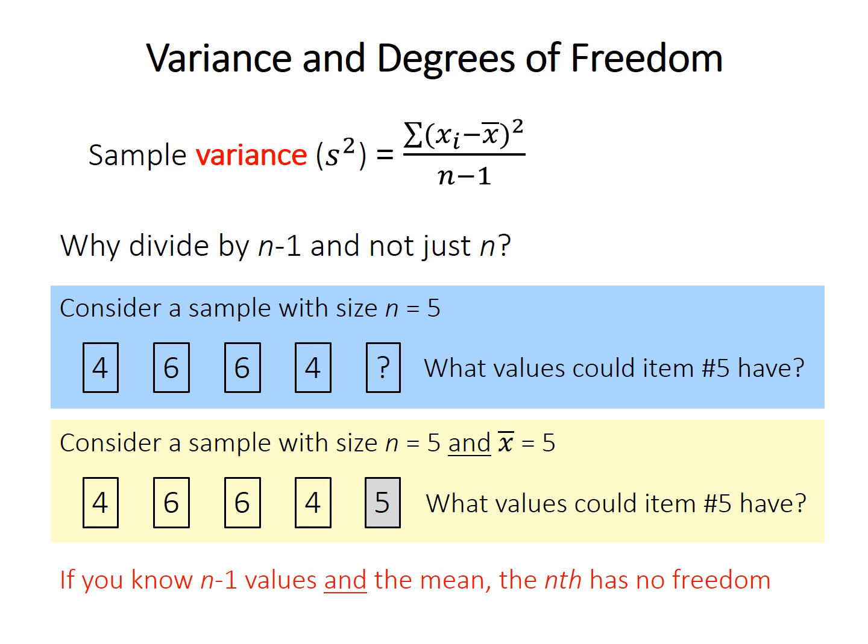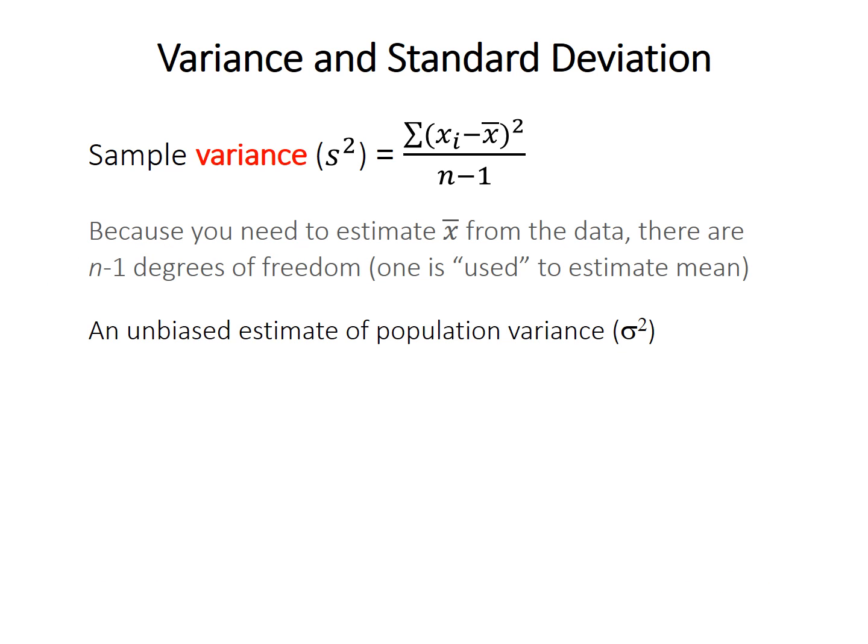So basically, n minus 1 is often used in these things where one of the degrees of freedom is used to calculate the mean. So this gives us what's called the unbiased sample variance. The n minus 1 is the unbiased estimator, as opposed to just using n. Sample variance is calculated as the sum of squares divided by n minus 1, because we have n minus 1 degrees of freedom, having used one of them to estimate the sample mean from the data itself.